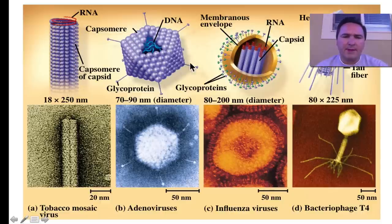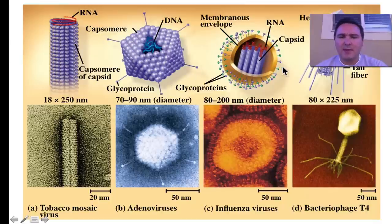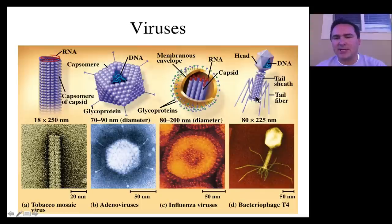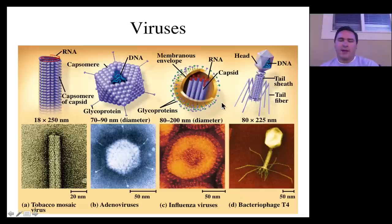Or they can be much more complicated. They can have multiple capsids on the inside of a membranous envelope. They can even have this shape where you have a head with the DNA on the inside, and then it has this tail and these tail fibers that are used basically as an injection tube. So there's really quite a huge variety of viruses.